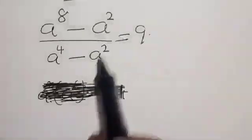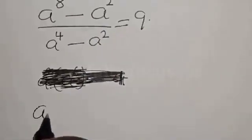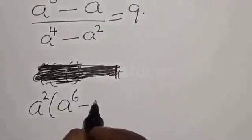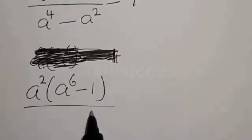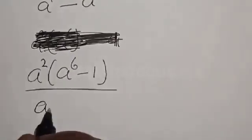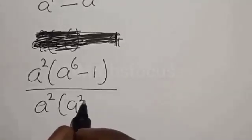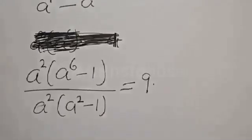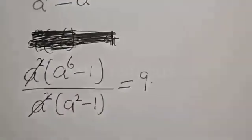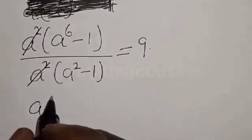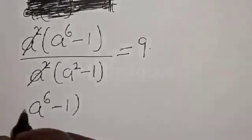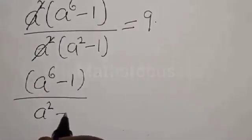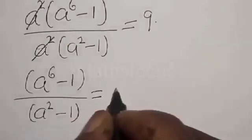From here we can factor a squared out. We have a squared times (a raised to power 6 minus 1), divided by a squared times (a squared minus 1), equal to 9. The a squared cancels, leaving a raised to power 6 minus 1, divided by a squared minus 1, equal to 9.